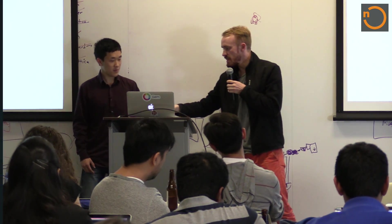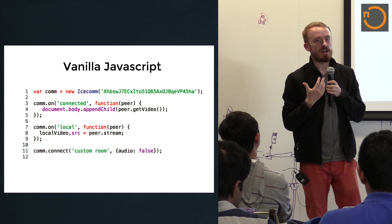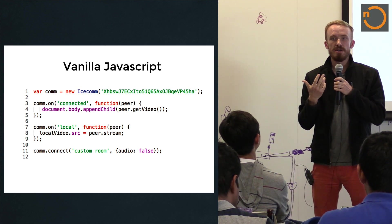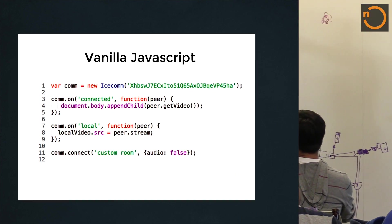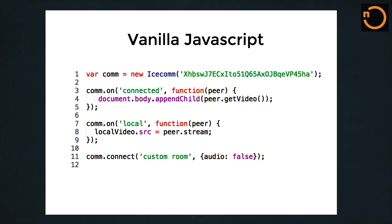Here's how it works with vanilla JavaScript. Feel free to go to icecom.io and click on View JSFiddle. You create a new Icecom object and grab an API key. You then set up a listener for when you connect and grab the video stream from your local webcam. Then you set up a listener for when your other peer connects, grab their video stream, and append it to the body. Then you connect. It's pretty simple.